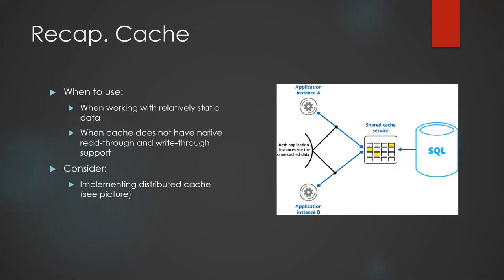Final recap part: caches. When to use: when working with relatively static data, or when the cache provider you use doesn't have native read-through and write-through support. I would recommend considering a distributed cache implementation — when you have more than a single instance of your application, you probably don't want to keep caches in every single instance. In-memory might not be the greatest idea, so use some shared cache service. It will take more time and be more complex, but caches will be way more effective.